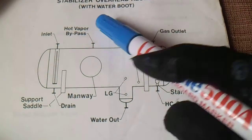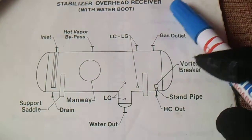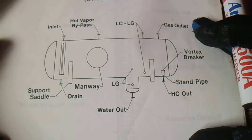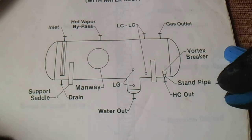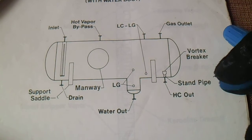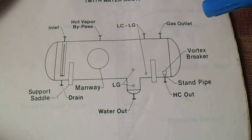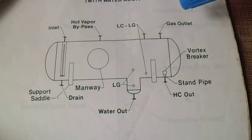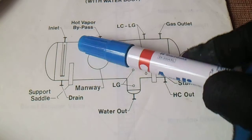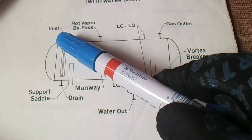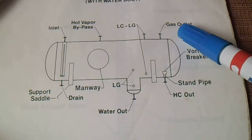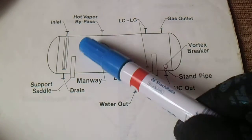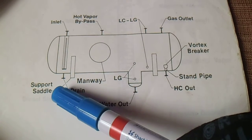Next is the stabilizer overhead receiver with a water boot. This stabilizer has different nozzles from the top, bottom, and sides, with dimension names. We have inlet hot bay 4, gas outlet, vortex breaker, water out, manway, drain, and a support saddle.